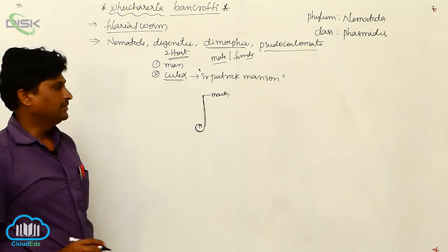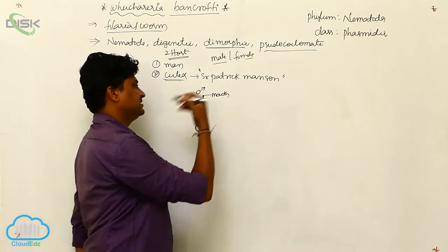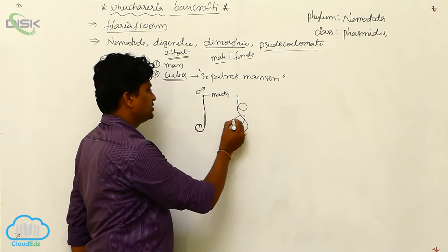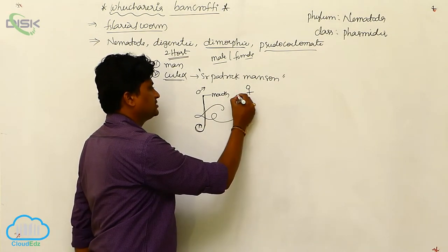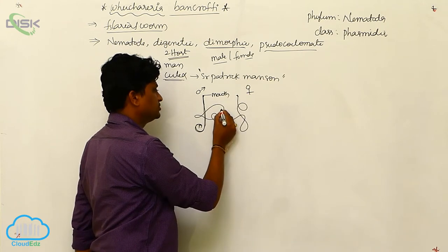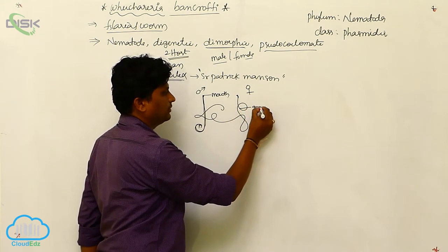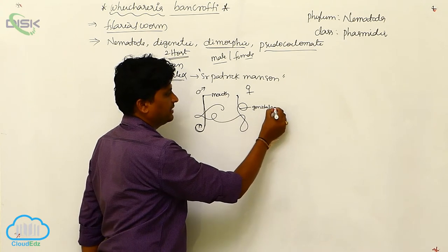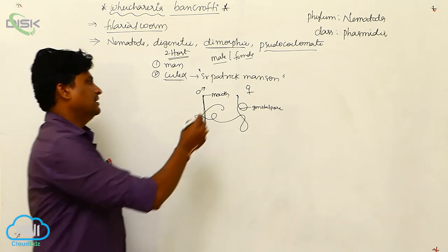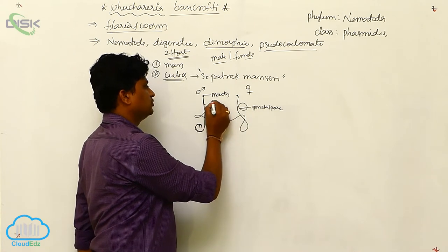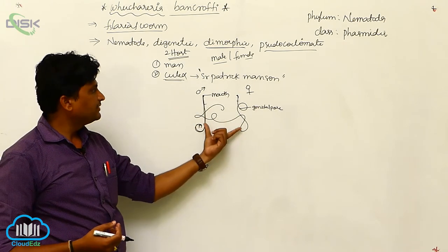The female is longer than the male. In the female, the anterior is blunt and the posterior is pointed. One-third of the way along the body there is a genital pore. Near the last part of the body there is an anus, and just below the mouth there is an excretory pore.